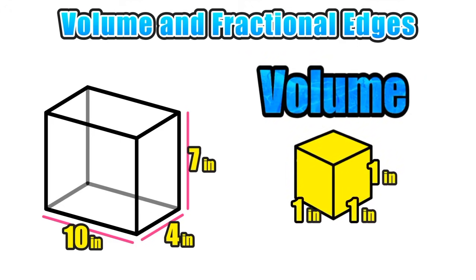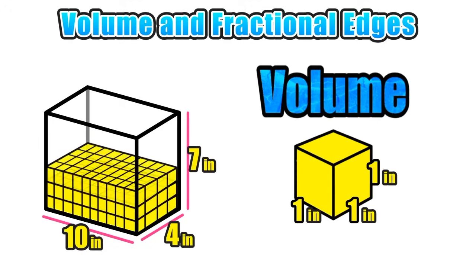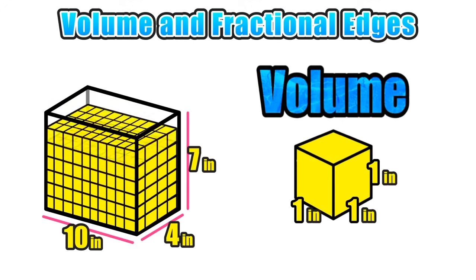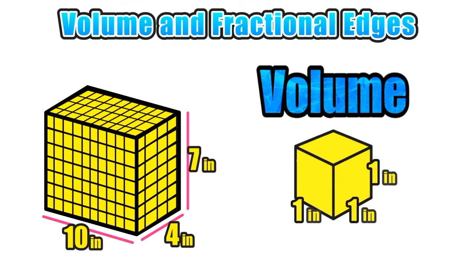In geometry, we express volume in cubic units. The volume represents the number of unit cubes it would take to fill the entire prism. Since the length, width, and height of the prism shown are measured in inches, our unit cube will have a length of 1 inch, a width of 1 inch, and a height of 1 inch. If we completely filled the prism from bottom to top with these 1-inch unit cubes and counted the total, that final total would represent the volume. However, counting every single one of these cubes would take a very long time and is not the most efficient way to find volume.